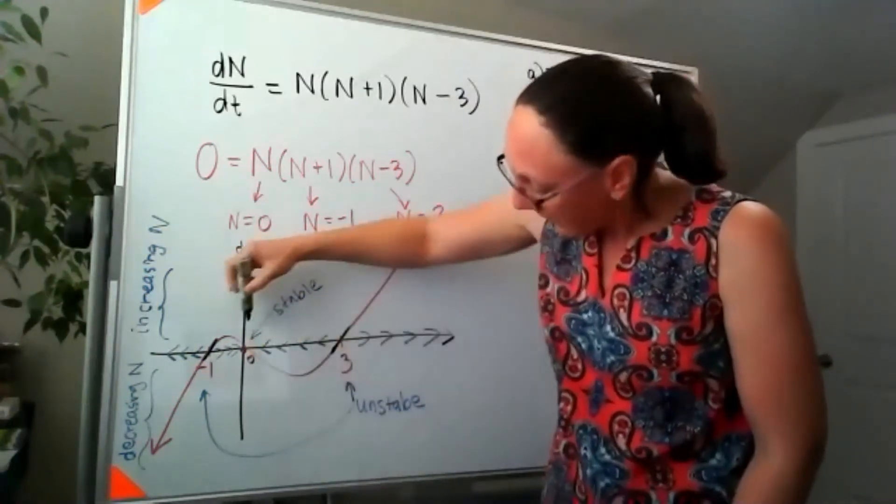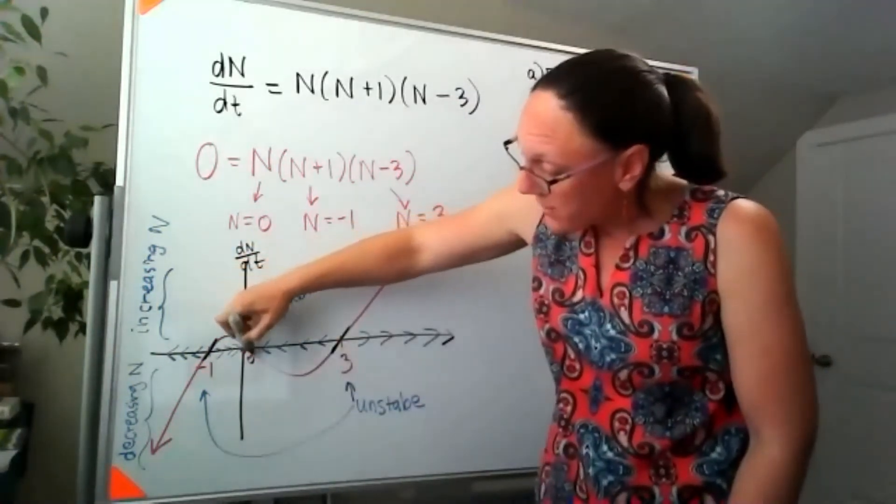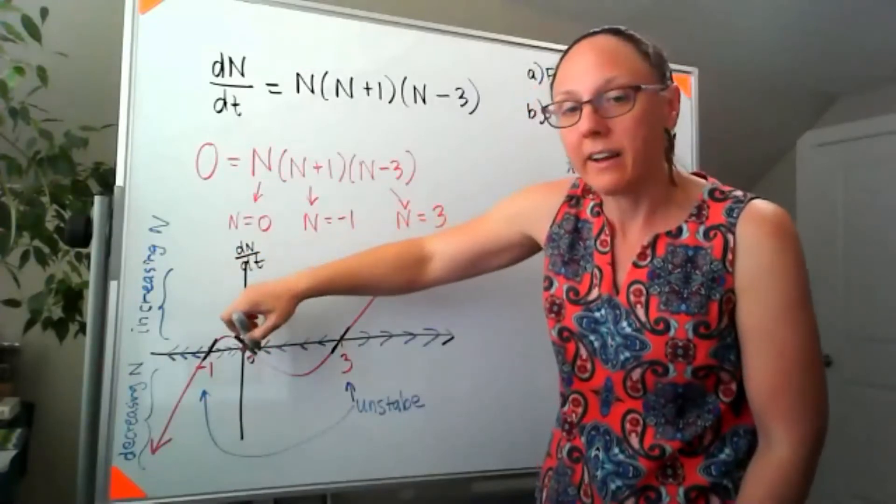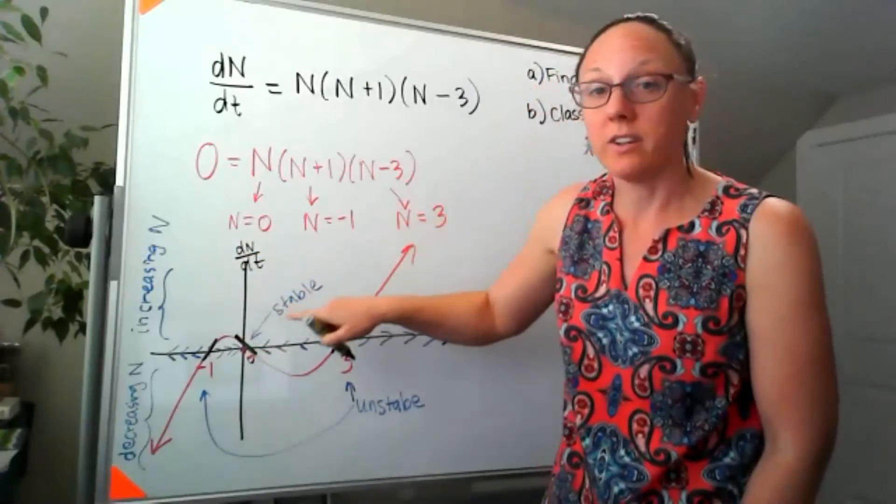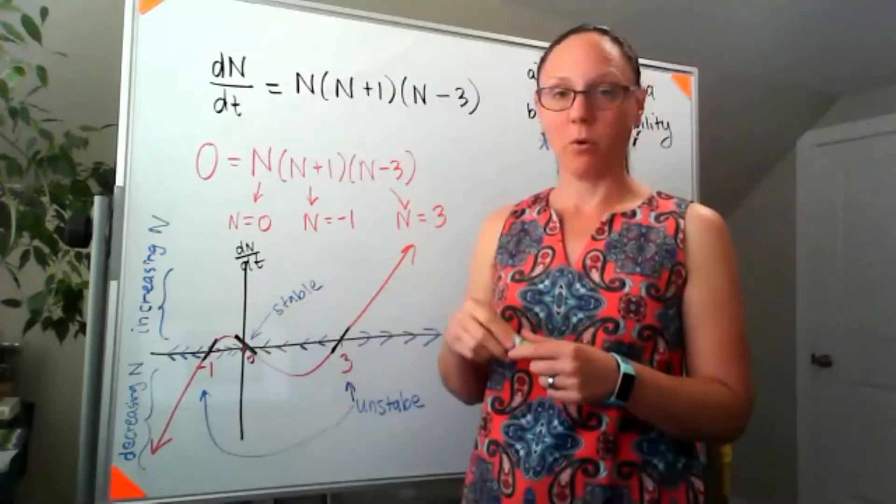At this point right here, as we pass through that equilibrium, the slope is negative, which is going to leave it, which is going to lead us to a locally stable equilibrium.